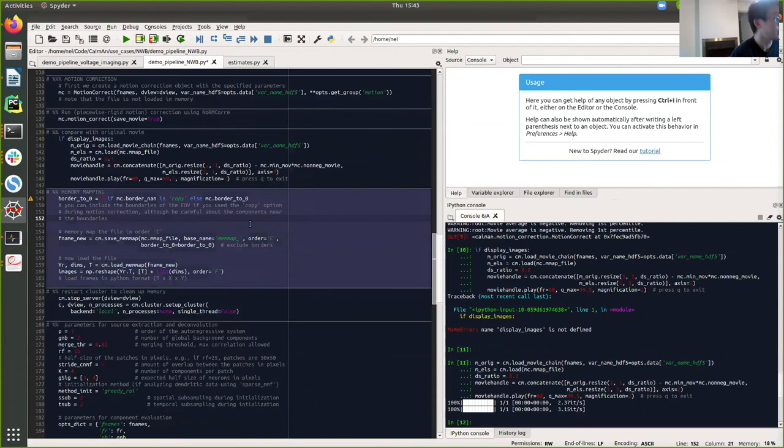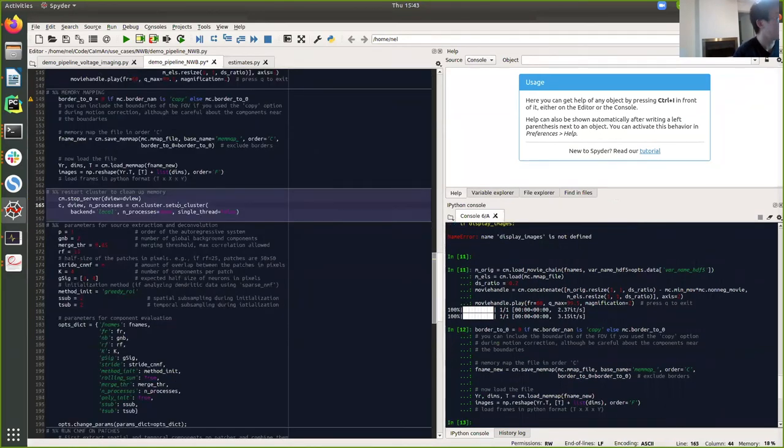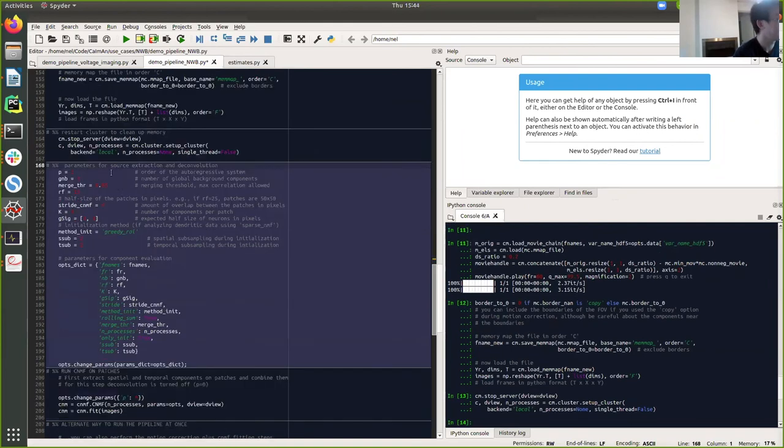So one parameter, this parameter needs to be noticed. That's whether you use piecewise rigid motion correction or you just use the naive rigid motion correction. To motion correct this video, we use the piecewise rigid. So after motion correction, we save the movie into memory mapping format. Here we save it into the C format. So this step should be quick. And we restart the cluster to clean up the memory.